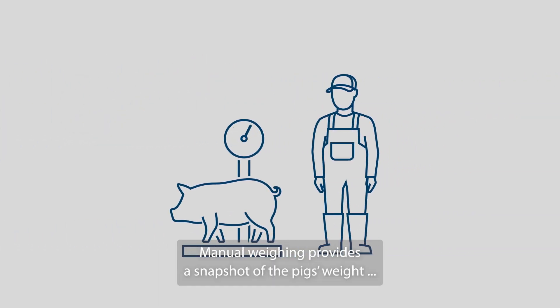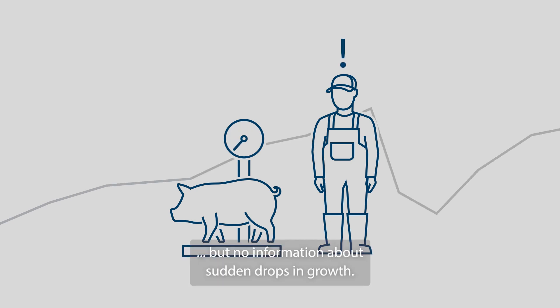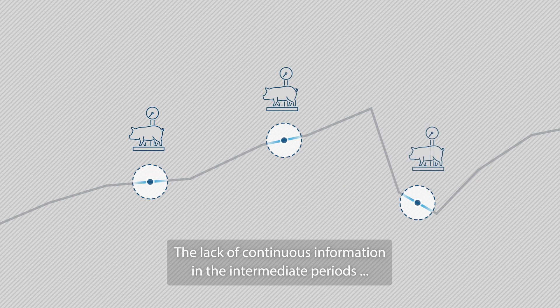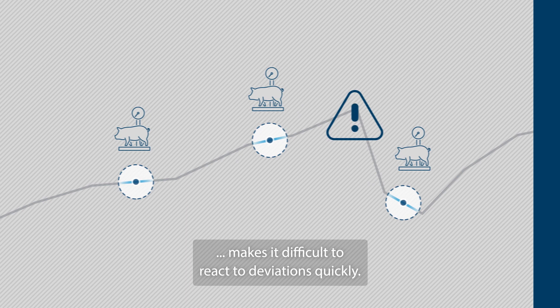Manual weighing provides a snapshot of the pig's weight, but no information about sudden drops in growth. The lack of continuous information in the intermediate periods makes it difficult to react to deviations quickly.